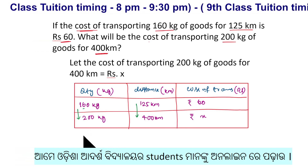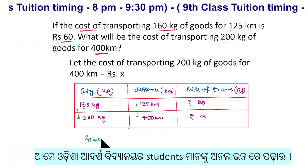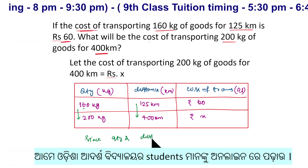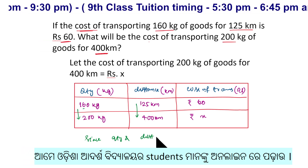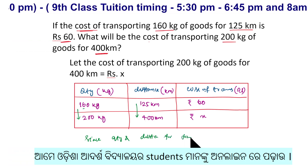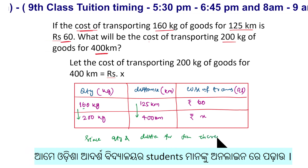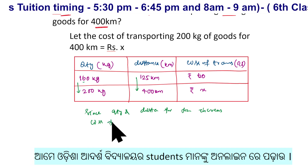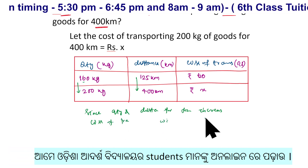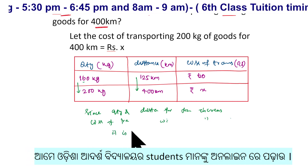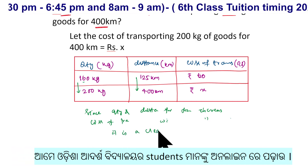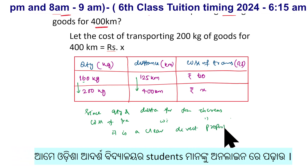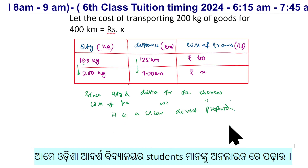Since the quantity and distance of transporting increases, the cost of transporting will also increase. So it is a clear case of direct proportion.